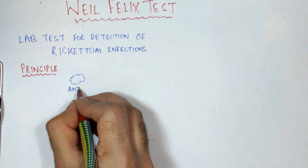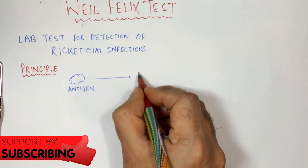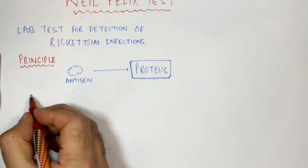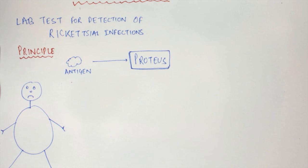Suppose this is an antigen on Rickettsia. It has been found that the antigens on Rickettsia resemble the antigens present on the surface of Proteus bacteria. Suppose this is a human who has rickettsial infections, so he has these rickettsial antigens in his body.